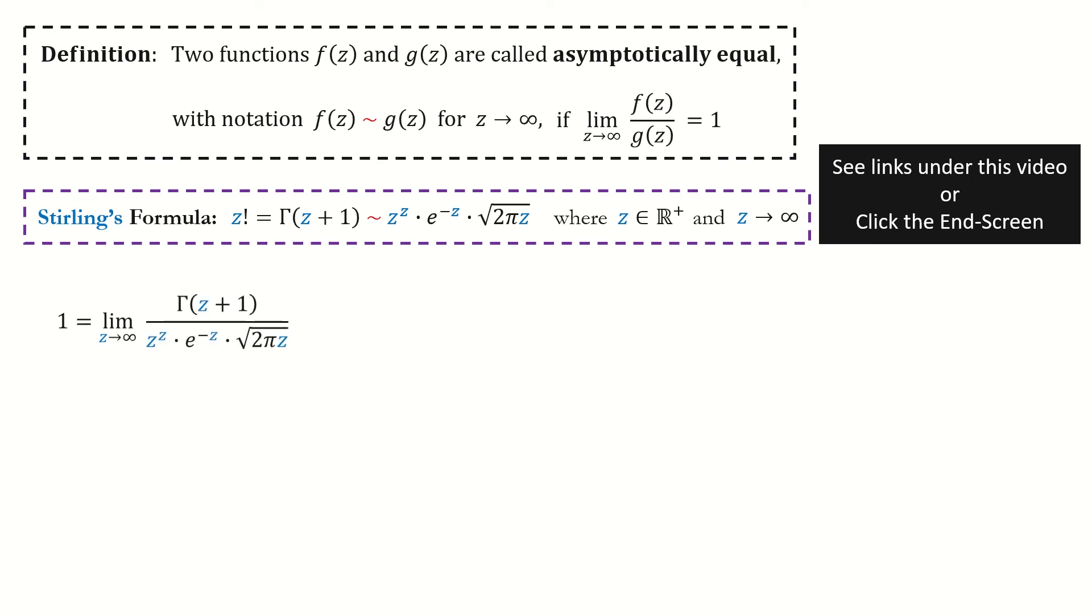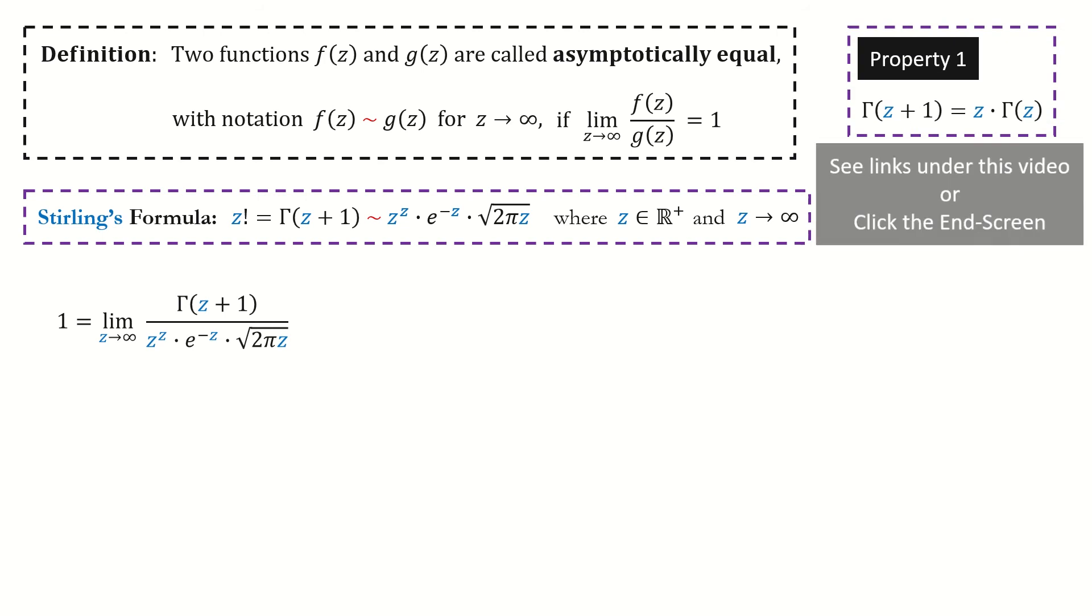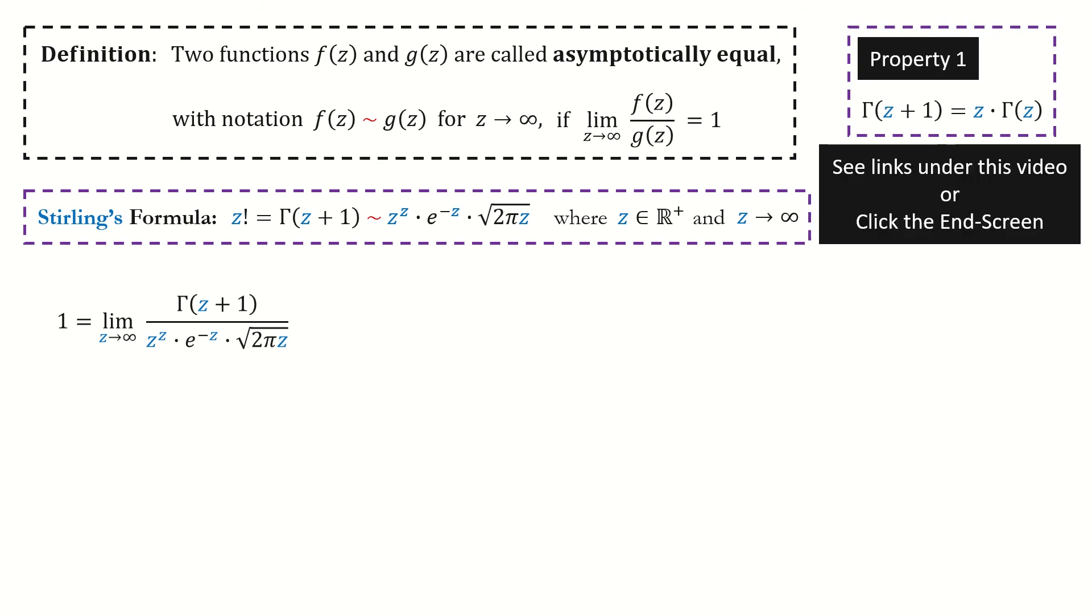By definition, we write it in this way. First, let's deal with the numerator. Recall the property 1 we derived in episode 1. After replacing the numerator, we got here.